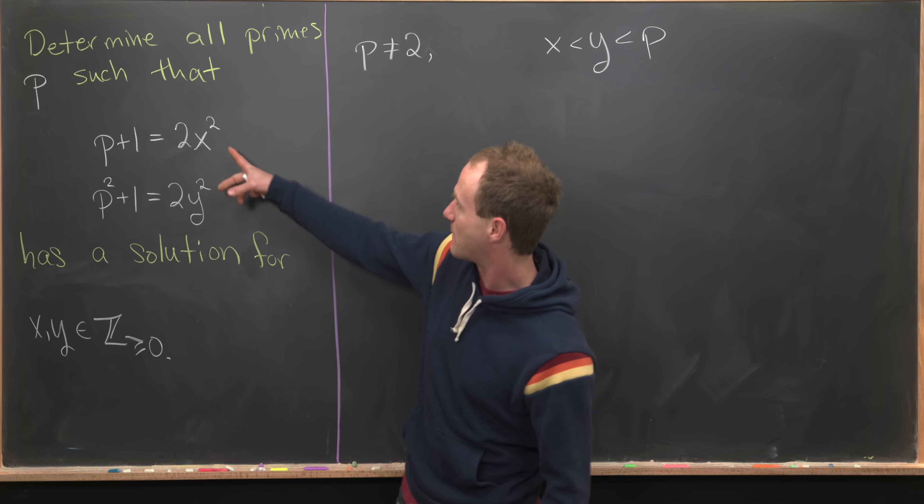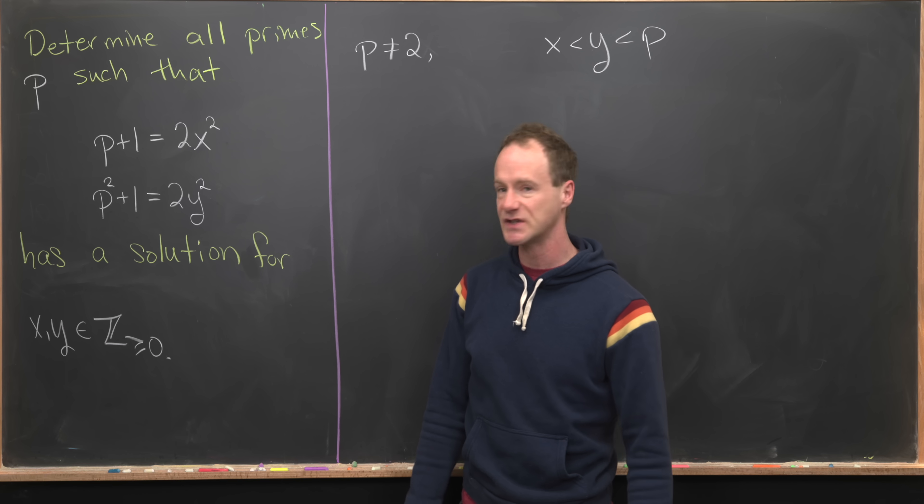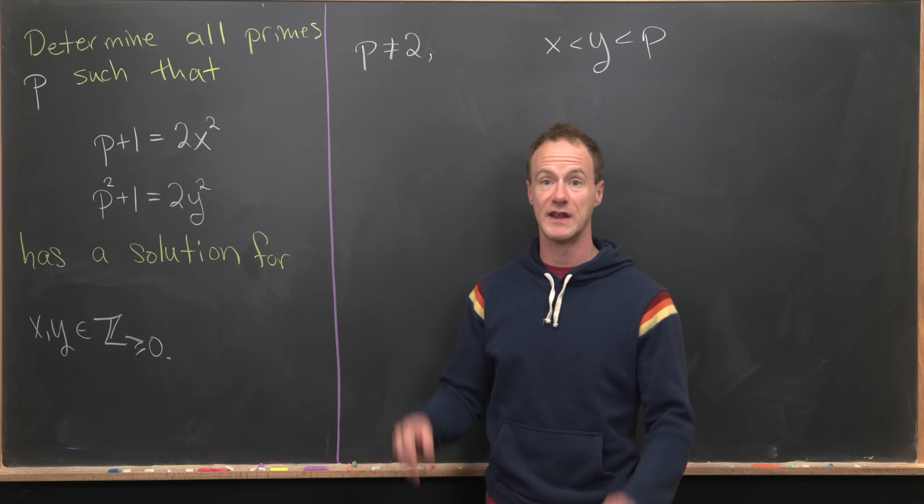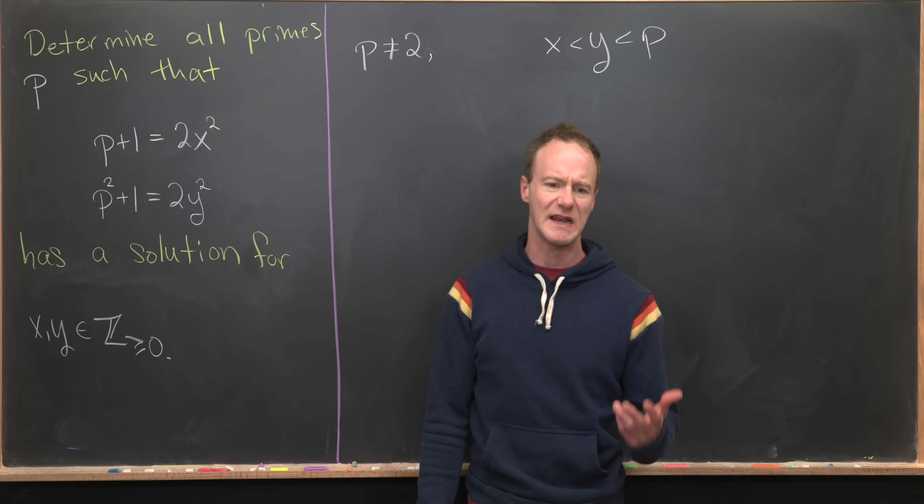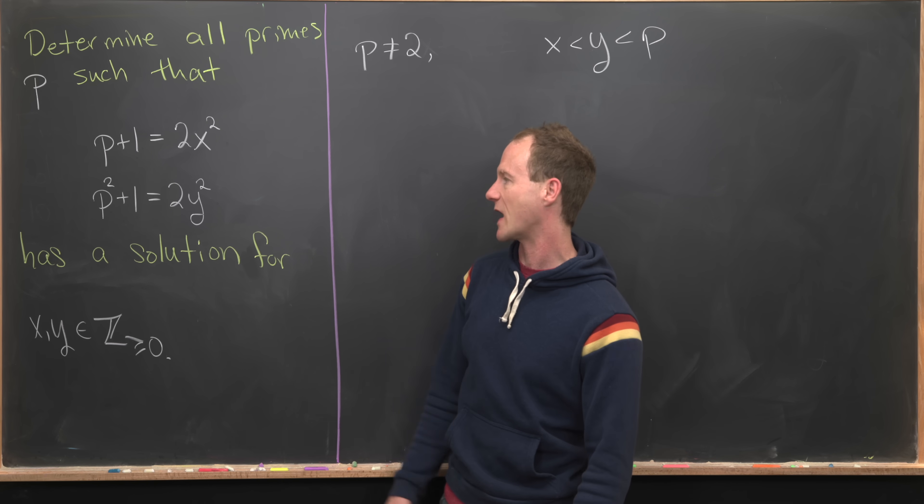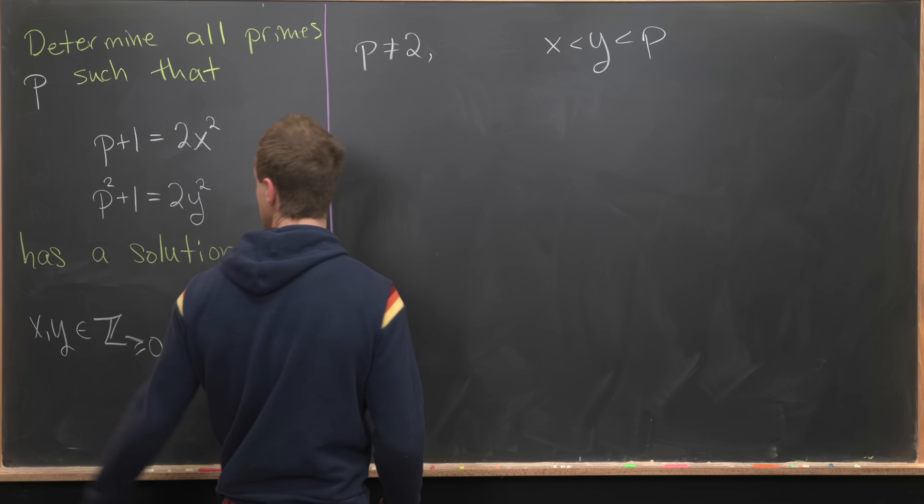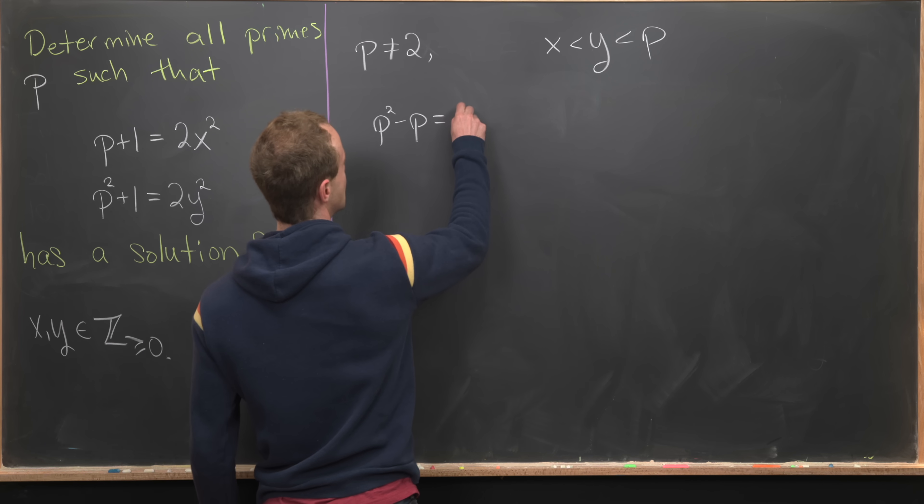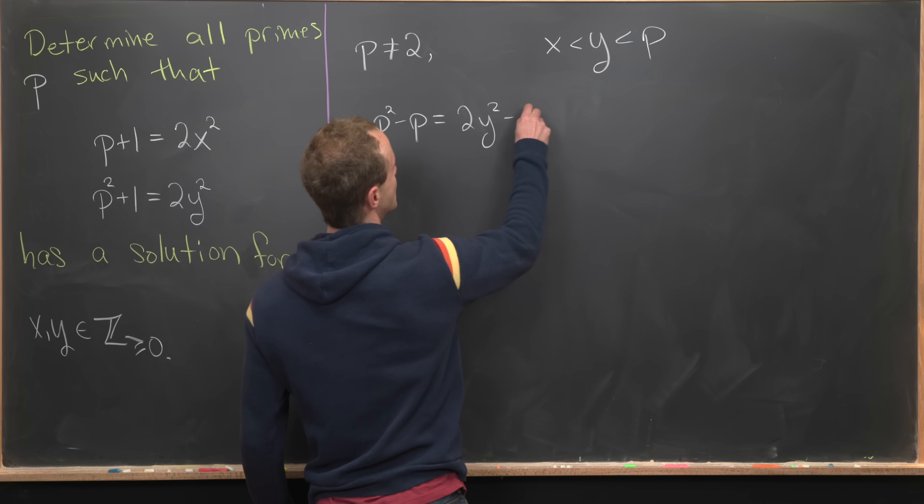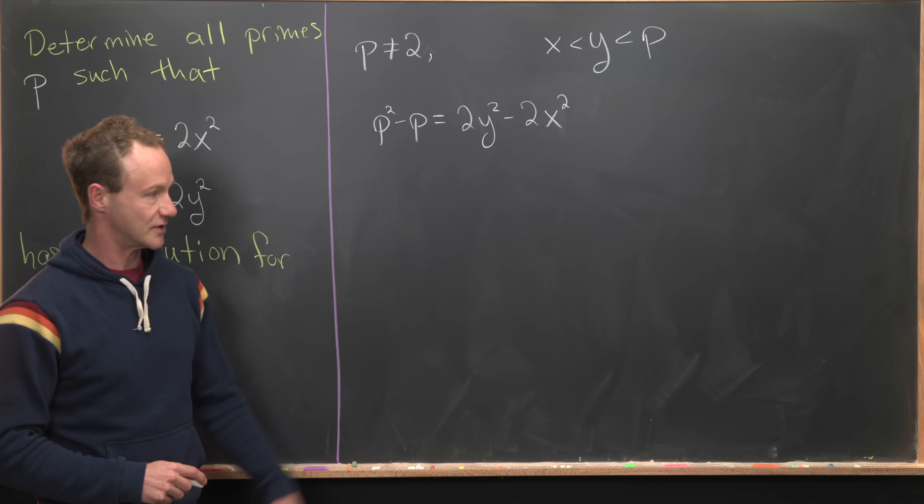We're going to start by combining these equations to get rid of the free numbers. The only free number is 1, and we can get rid of that by subtracting. If we go second equation minus first equation, that gives us p²−p equals 2y²−2x².